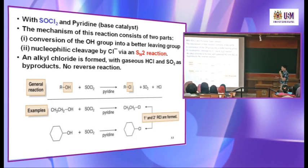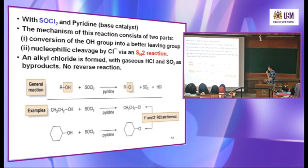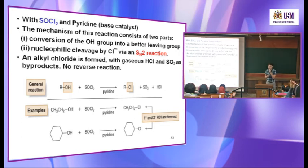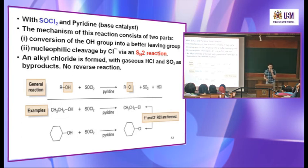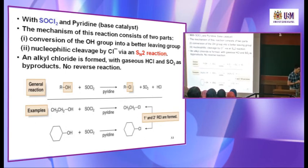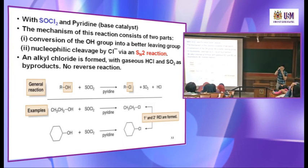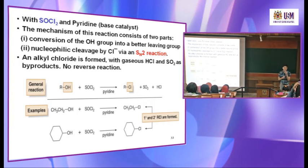The reaction of alcohol with thionyl chloride in the presence of pyridine: this mechanism is very similar to POCl₃, but while POCl₃ gives a beta elimination product, SOCl₂ gives a substitution product — an alkyl chloride. The lone pair on oxygen attacks the sulfur atom of SOCl₂. Chloride is a better leaving group, so one Cl leaves, and you form an intermediate species: O–S(=O)–Cl with a positive charge on oxygen.